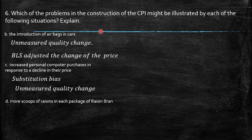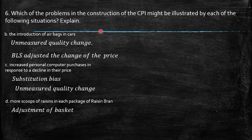More scoops of raisins in each package of a raisin brand. There should be an adjustment of the basket because maybe you don't need one full box anymore — maybe just half a box. This variation means the basket remaining as one box of a raisin brand is not measuring the same thing, because the price has changed not in terms of per gram — it should be cheaper if you are receiving more quantity of the product inside the box.